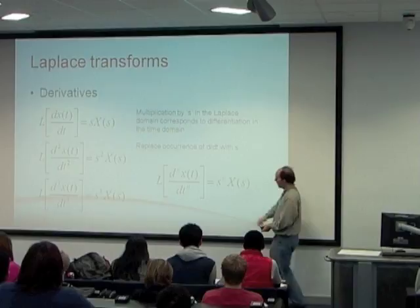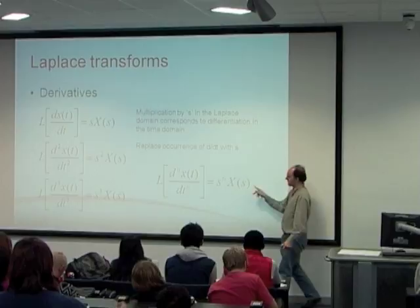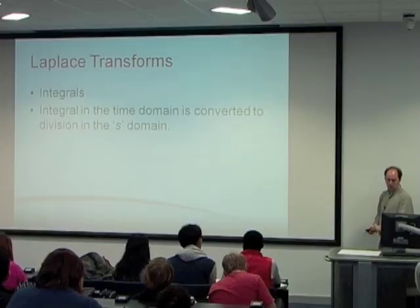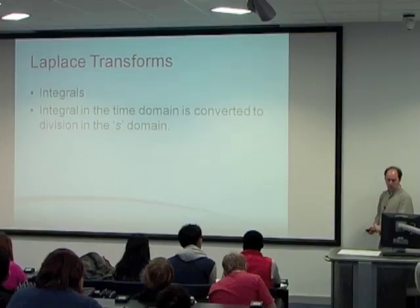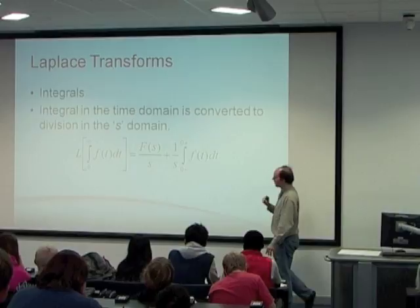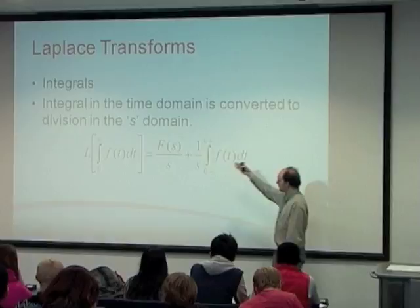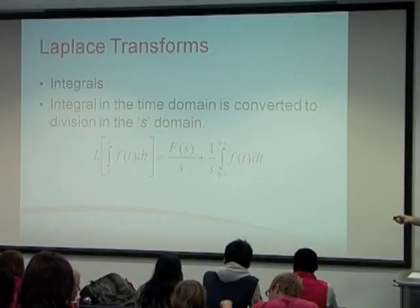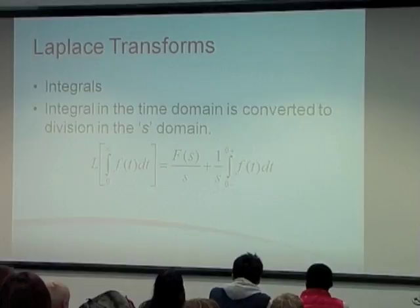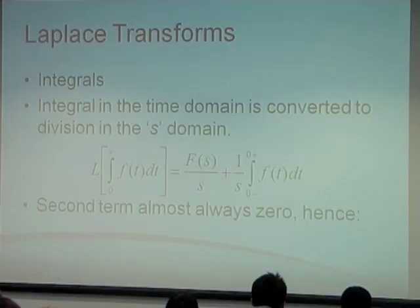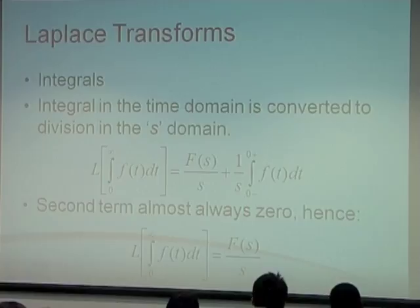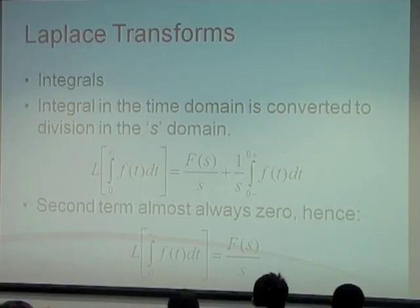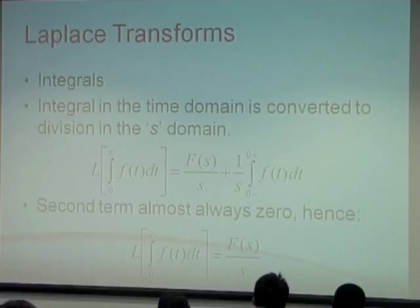What about integrals? The general rule is: d/dt to the power of N becomes S to the power of N times X. For integrals, you divide by S — this converts the time domain integral to the S domain, and the constant of integration term is almost universally zero. So essentially, to get an integral, you divide by S. Every time you see a d/dt, you multiply by S. If you see an integral, you divide by S. Two integrals would give you S squared in the denominator.